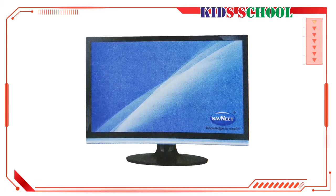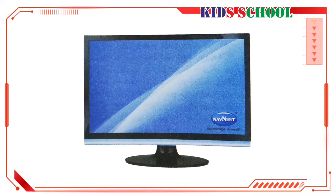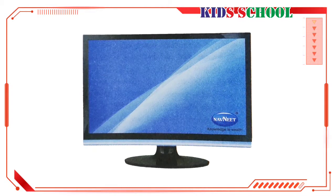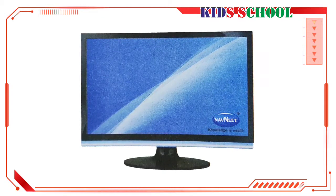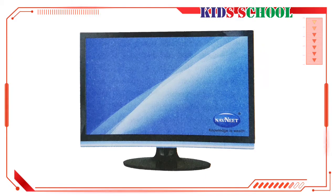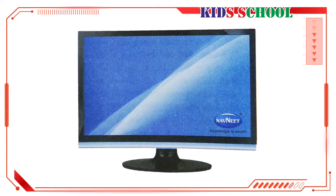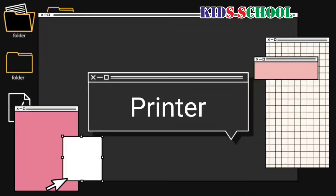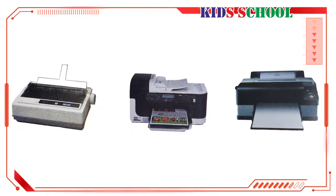Data entered into a computer is processed according to instructions, and the information that is generated is displayed by the monitor. Also, when you enter data or give instructions to the computer, the monitor screen displays whatever you are currently typing. Any information generated by the computer is displayed by the monitor.